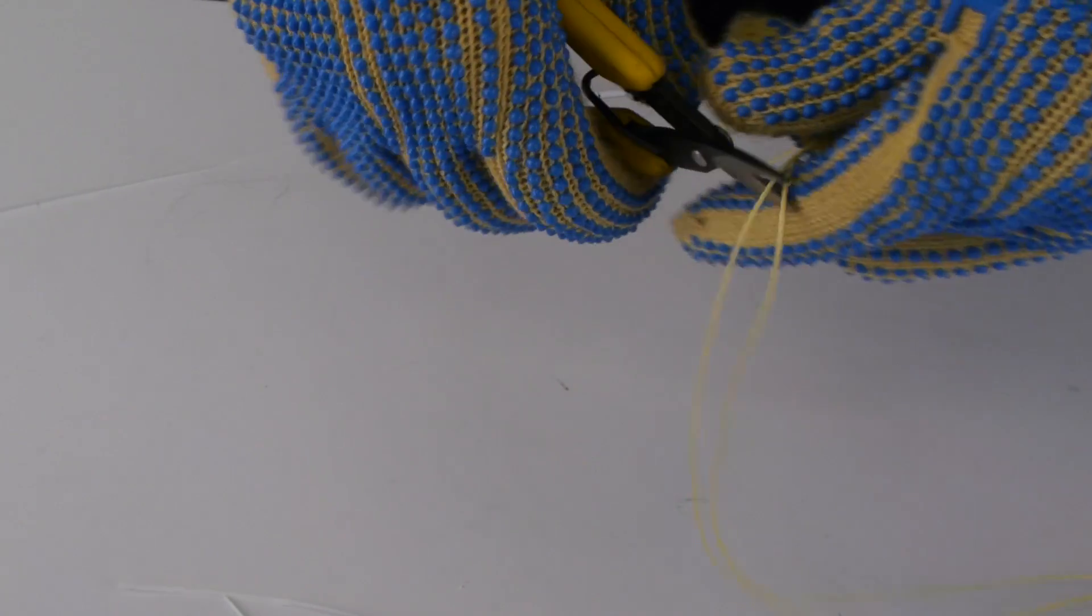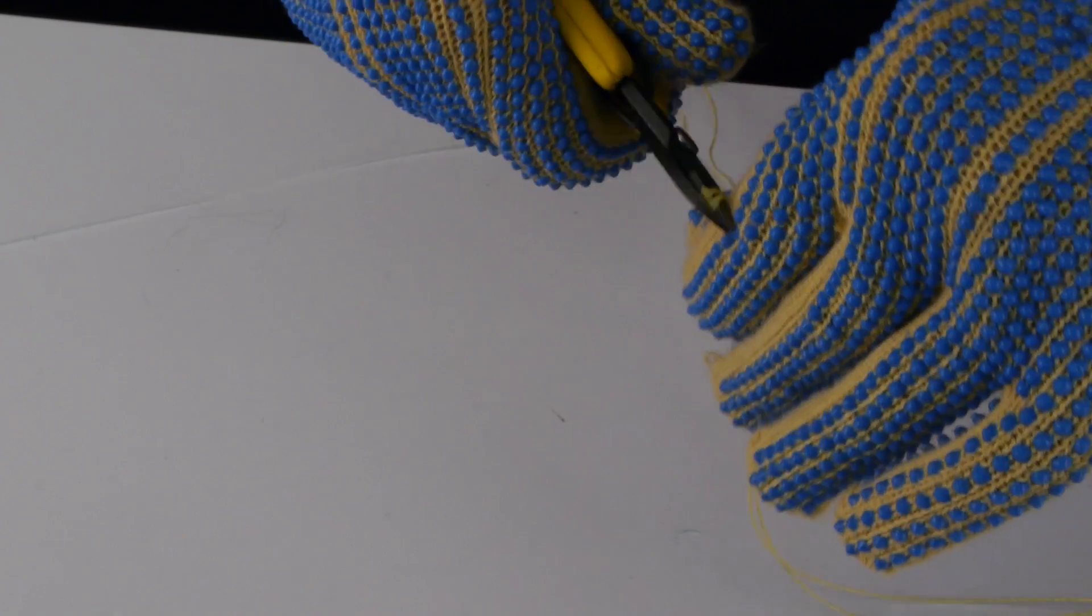With the aramid shears, cut off the strength yarns, rip cords, water blocking tape, and binder yarns, leaving about 12 inches of yarns from the end of the jacket.